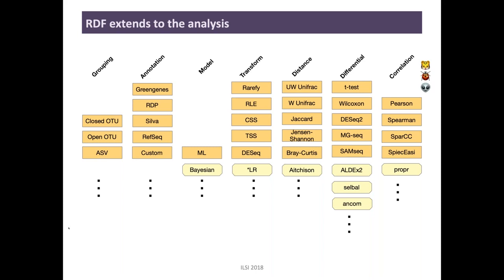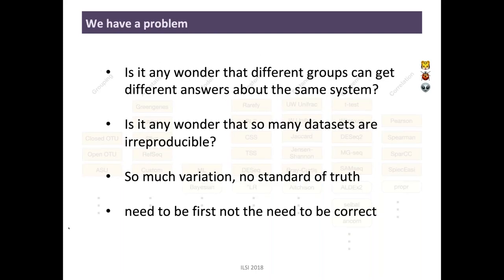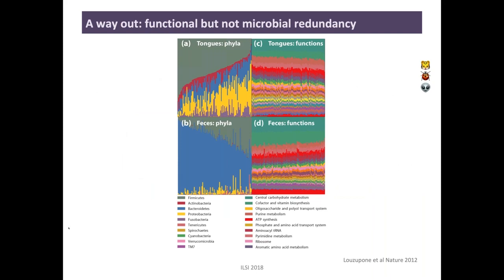We have a big problem. Is it any wonder that different groups can get different answers about the same system? You can have completely different taxa that are supposedly causative for your favorite disease. Is it really any wonder that so many datasets are irreproducible? The problem stems from the fact that there's so much variation in the human microbiome and there's no standard of truth. And people feel that they need to be first rather than correct.